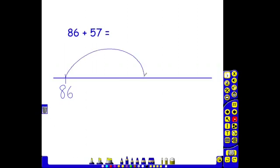If they find that skill too tricky, they could add on in jumps of 10. Hopefully, they would have the skills to be able to jump on one jump of 50. 86 add 50 is 136. They've added on the tens of their number.